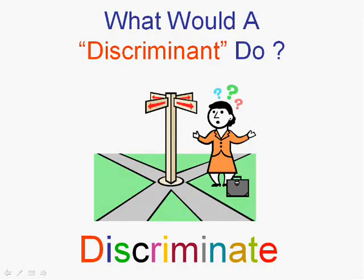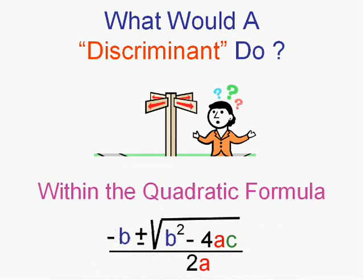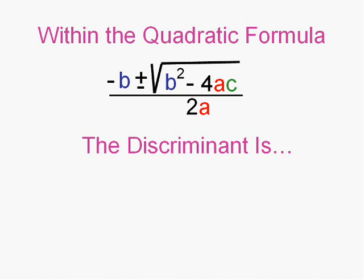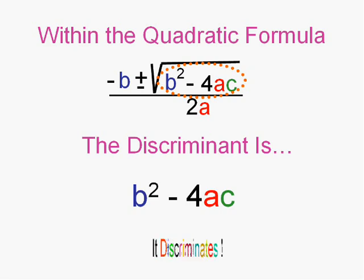So that we don't have to do or execute a whole problem, simplify the whole quadratic formula, what I want you to know is that within the quadratic formula, the discriminant is the part inside the square root. And what part is that? b squared minus 4ac. Don't have to take any square roots to find the discriminant because it's the part inside the square root. And it discriminates.